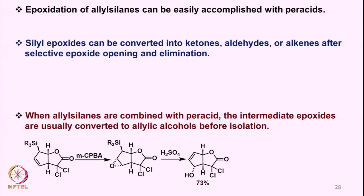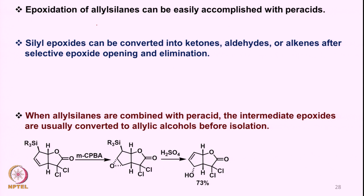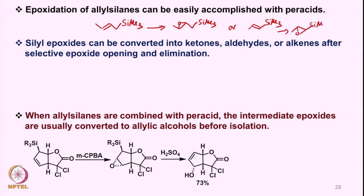Now, epoxidation of allylsilanes can also be accomplished by peracids. An allylsilane of any kind can be reacted with a peracid to form the allyl epoxide, and products of this kind or even from the vinylsilane can also generate epoxides. All these epoxides lead to the formation of different kinds of ketones, aldehydes, or alkenes after selective epoxide opening and elimination.